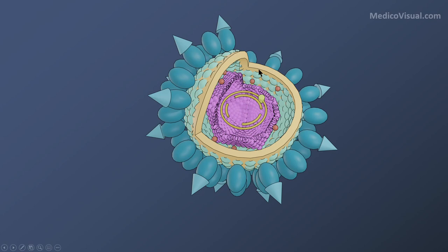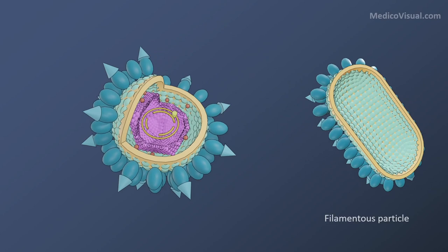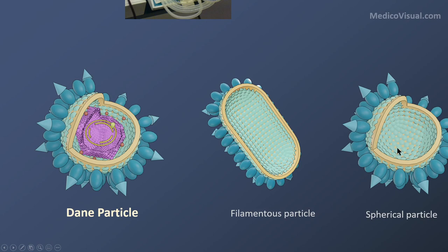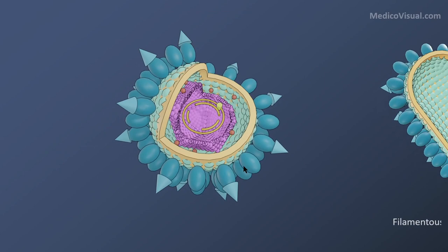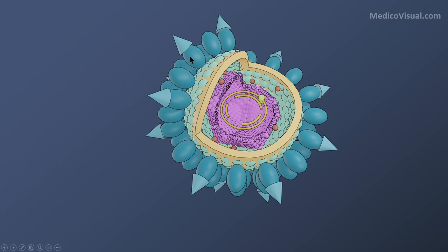The outermost part of the virus particle is called the envelope — the outer coating. This envelope is the only thing present in filamentous and spherical particles. In the complete virus, we also have a nucleocapsid, but in filamentous and spherical particles it only contains the envelope. We will discuss the structure of this virus step by step, starting with the structure of the envelope, using a simpler diagram.